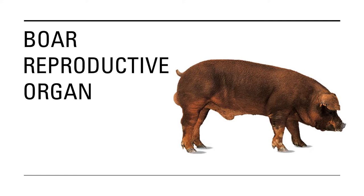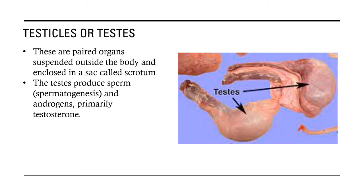First is the boar reproductive organs. First is the testicles or testes. When we say testicles or testes, these are paired organs suspended outside the body and enclosed in a sack called scrotum. What we can see with the naked eye is the scrotum — what is enclosed by the scrotum is the actual testicle.